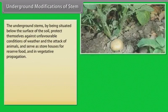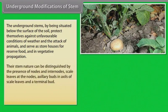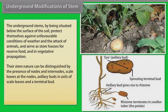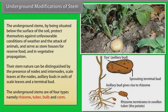The underground stems, by being situated below the surface of the soil, protect themselves against unfavorable conditions of weather and the attack of animals, and serve as storehouses for reserved food and in vegetative propagation. Their stem nature can be distinguished by the presence of nodes and internodes, scale leaves at the nodes, axillary buds in the axils of scale leaves, and a terminal bud. The underground stems are of four types: rhizome, tuber, bulb, and corm.